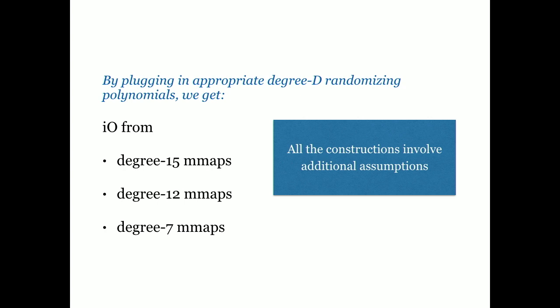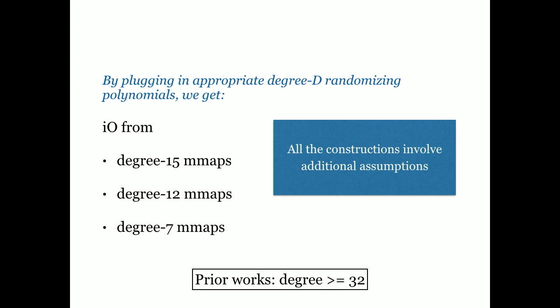Once you plug in the appropriate degree-D randomizing polynomials in this transformation, we get IO from degree-15 M-maps, degree-12, and degree-7. The 12 and 15 are essentially very similar constructions of randomizing polynomials, and degree-7 M-maps uses a different construction of randomizing polynomials. The degree of M-maps used in prior works was at least 32.